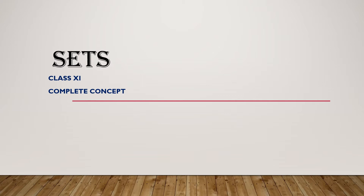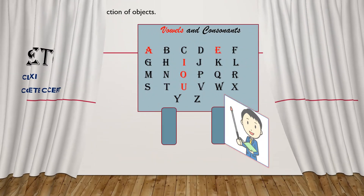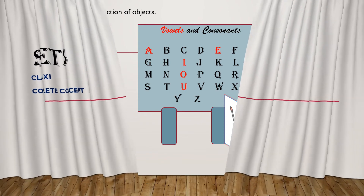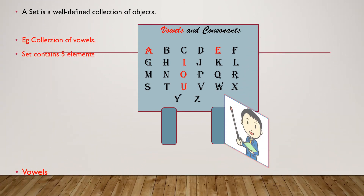Let us first understand the definition of sets. A set is a well-defined collection of objects. Note that this word 'well defined' is very important — the collection should be well defined in order for it to be understood as a set.